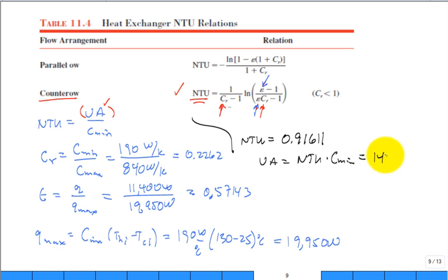Then I see that UA is equal to the number of transfer units times C min. And I calculate UA to be 174.06 watts per degree C. Then the area is UA divided by U. So we divide by the given U, which was 110. And you count 1.5824 meters squared. Same answer.